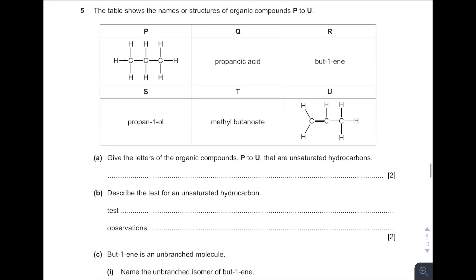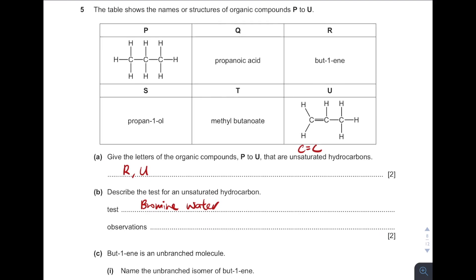Organic chemistry questions. Give the letters of the organic compounds that are unsaturated hydrocarbons. Unsaturated hydrocarbons are compounds that contain a carbon-to-carbon double bond, so they have to be alkenes. The answer is R and U, because they are alkenes. Then, how can you test for an unsaturated hydrocarbon? We can always test with bromine water or bromine liquid. The observation — the colour change is always from orange to colourless.